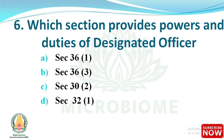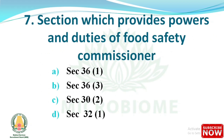Next question: which section provides powers and duties of the designated officer? Options are: section 36, section 36 sub-section 3, section 30, section 32. The right answer is option B: section 36 sub-section 3.